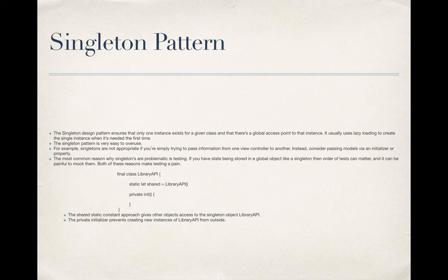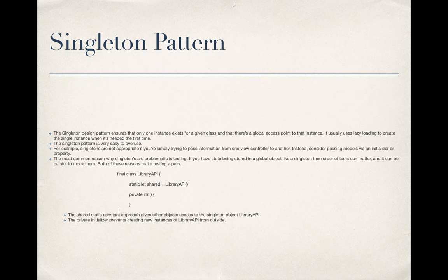So let's get right into it. First is the singleton pattern. Singleton pattern ensures that only one instance exists for a given class, and there is a global access point to that instance. It usually uses lazy loading to create the single instance when it's needed the first time. Singleton design pattern means you create only one instance of the class, and that is a global instance. Throughout your code, you can use that instance to access any method or variable of that class easily — singleton is like global access to a class and its methods.